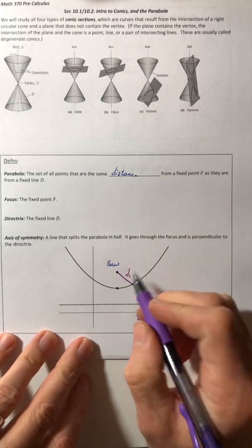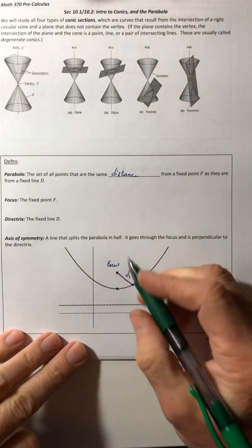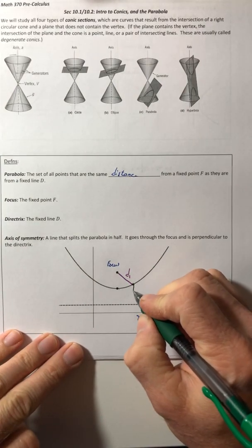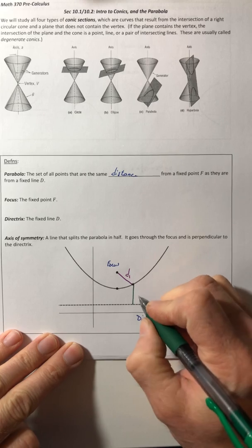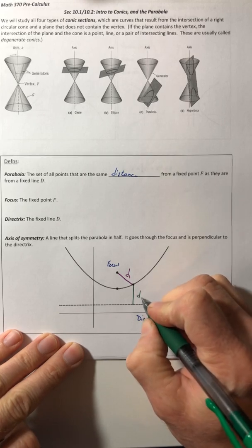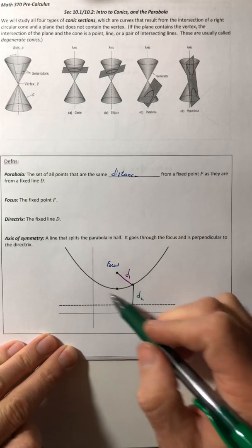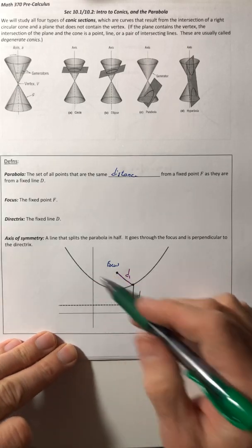So the definition says if I choose any point on this parabola and I measure the distance from the point to the focus, so I'd be like D1, it would have the same distance from that same point down to the directrix.